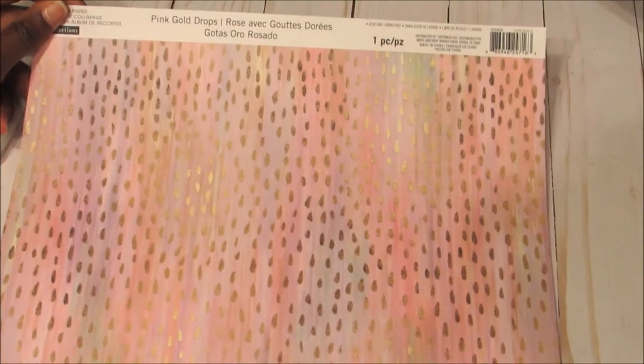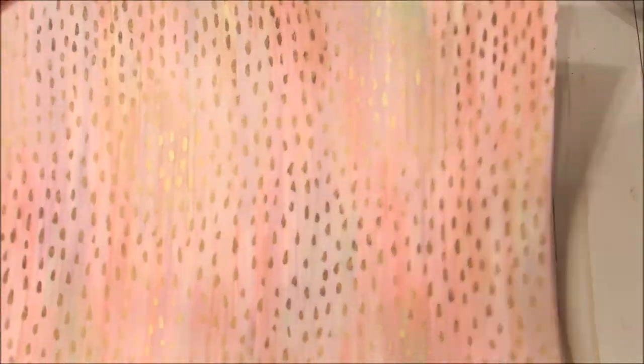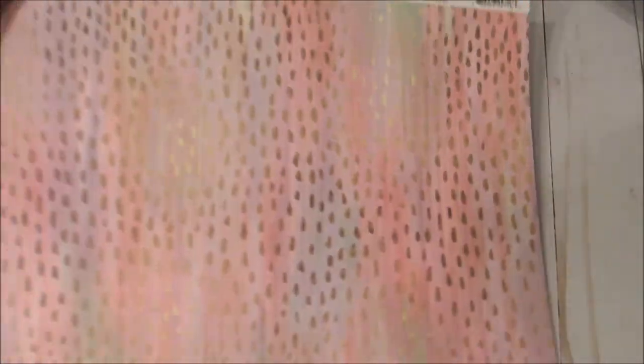Water. And it just looks like water. So it's going to be nice for bottom washi, kind of using it on the bottom of the planner. And this is pink gold drops. And if you can tell, it looks like it's a little gold. It's not foiled, but it just looks like it's a little gold color.